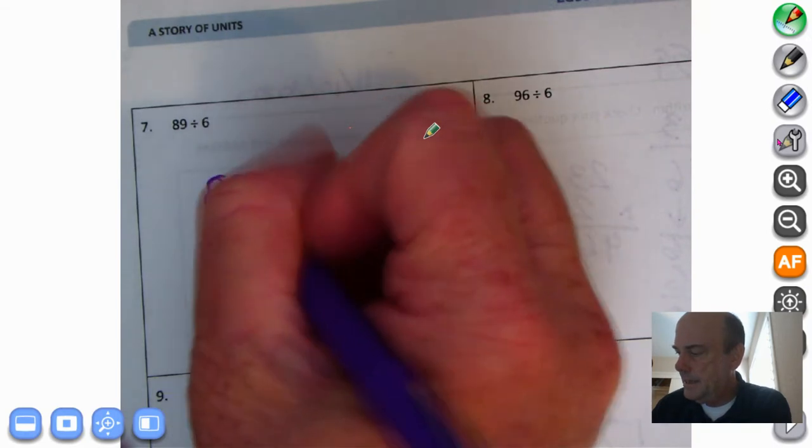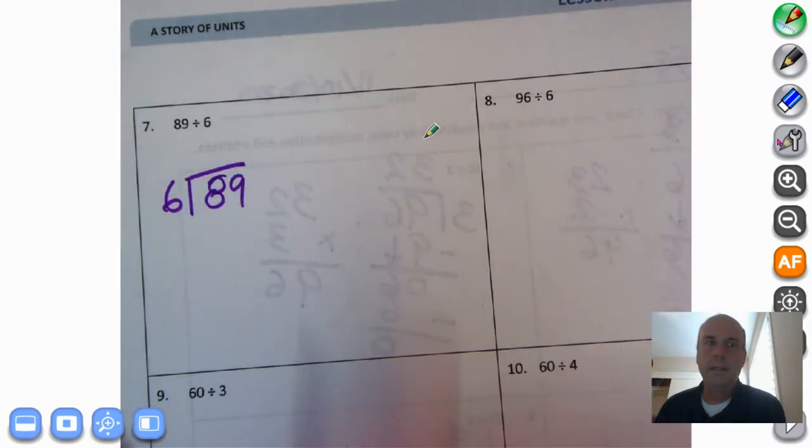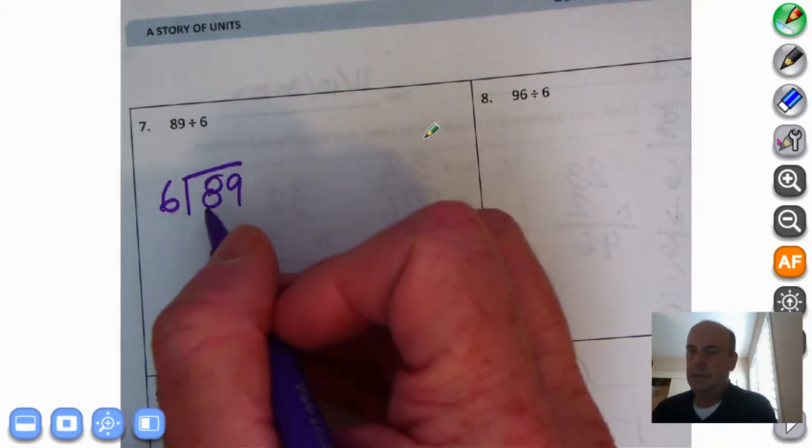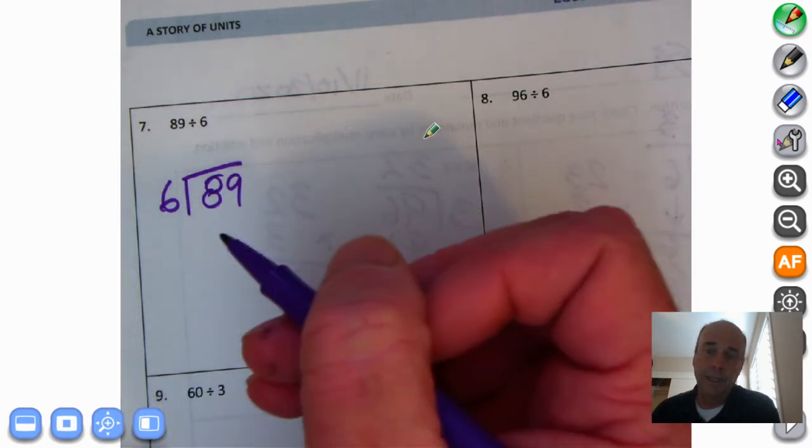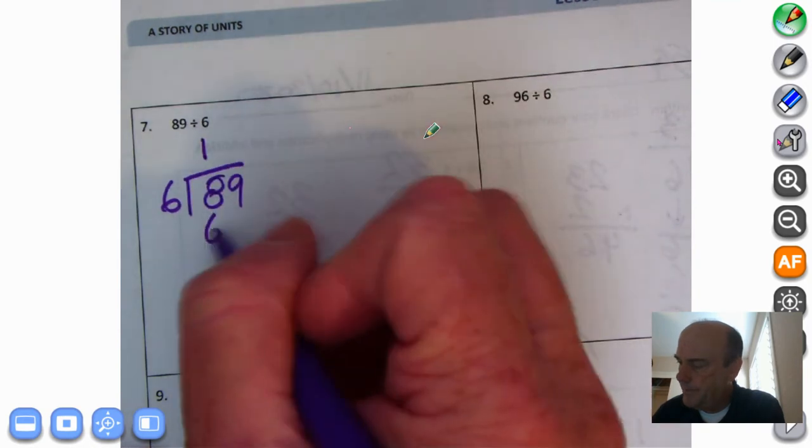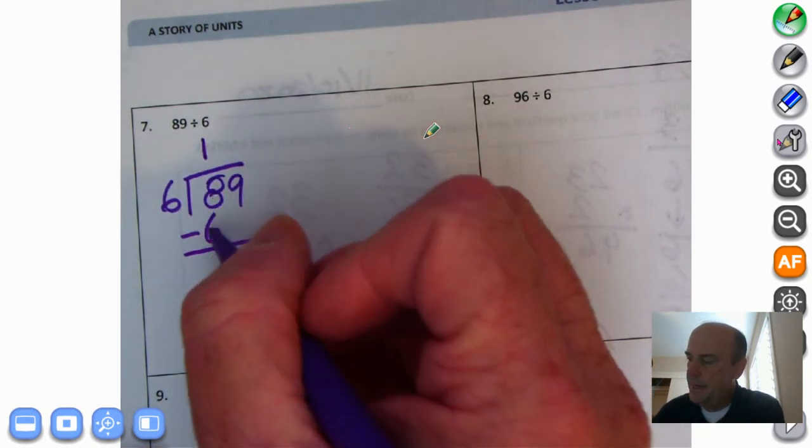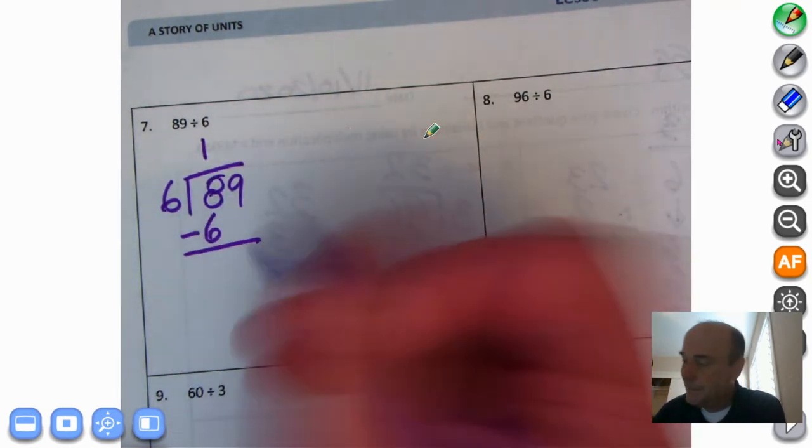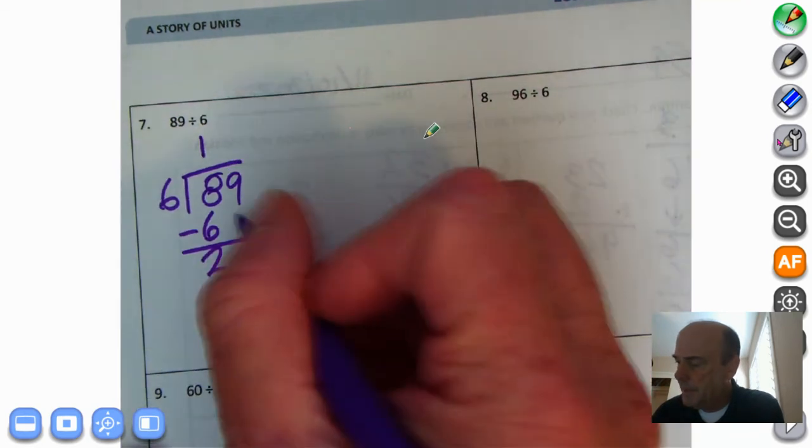We're doing 89 divided by 6. How many 6s can we fit inside 8? 6 times 1 is 6, 6 times 2 is 12, so it's just going to be 6 times 1. Subtract, 8 minus, it's actually 80 minus 60, would be 20. Bring down the 9.